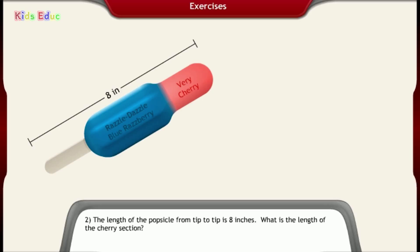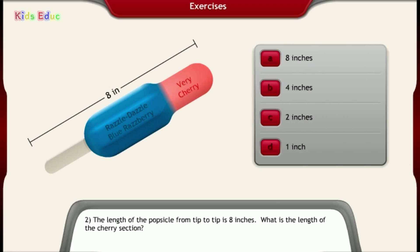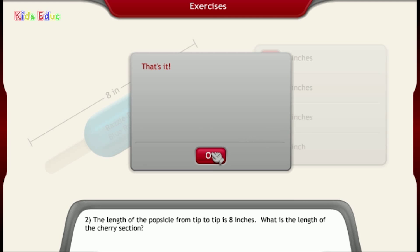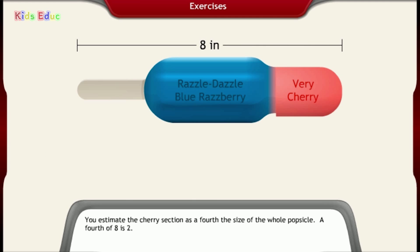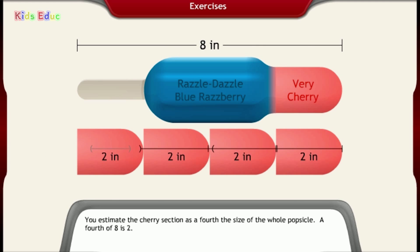Number 2, the length of the popsicle from tip to tip is 8 inches. What is the length of the cherry section? 8 inches, 4 inches, 2 inches, 1 inch. 2 inches. That's it. You estimate the cherry section is a fourth the size of the whole popsicle. A fourth of 8 is 2.